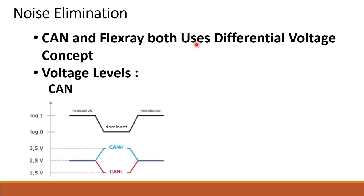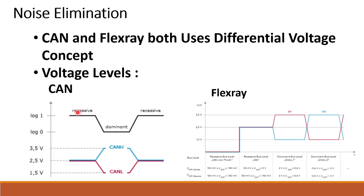Looking at the voltage levels: recessive means logic 1. For CAN, both CAN High and CAN Low are at 2.5V in recessive state. In dominant state, CAN High is 3.5V and CAN Low is 1.5V.